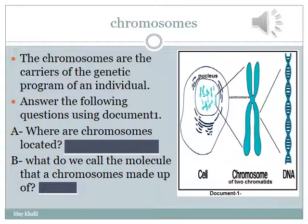Let's have a quick revision about the chromosomes. As you know, the chromosomes are the carriers — the real carriers — of the genetic program or genetic information. Observe document 1 very well. You will see that chromosomes are located in — you have to find the answer — and each chromosome is made up of — you have to find the answer under the box.